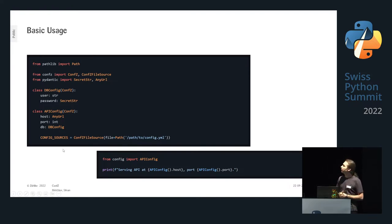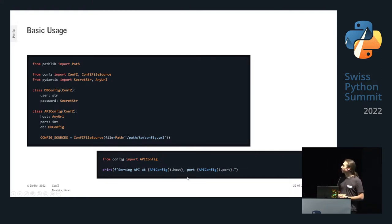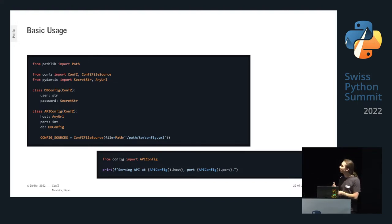So far that's plain Pydantic. Now we add the `config_sources` class variable, where we define where this config is stored. In this example, everything is stored in a YAML file at `path.config`. That's all you need — from now on, wherever you are in your system, you can import this config, instantiate it, and access the values. Under the hood, values are loaded from the file lazily and then persisted.